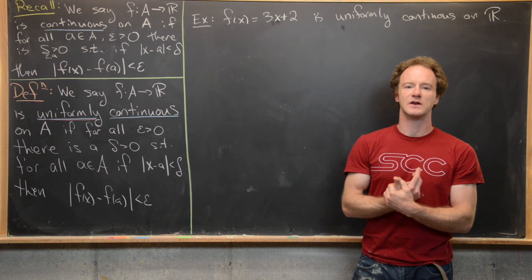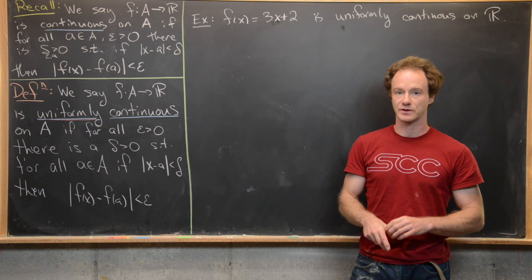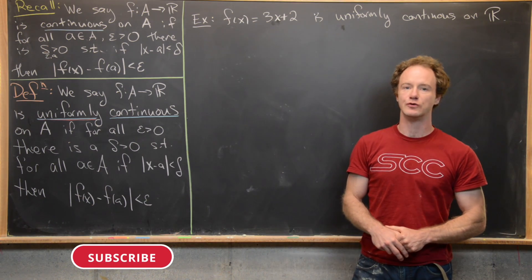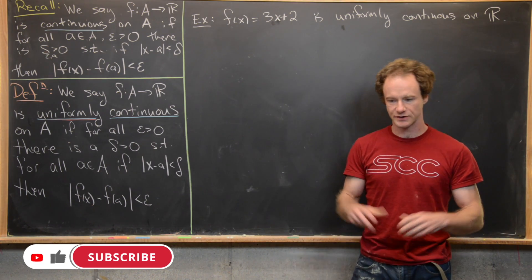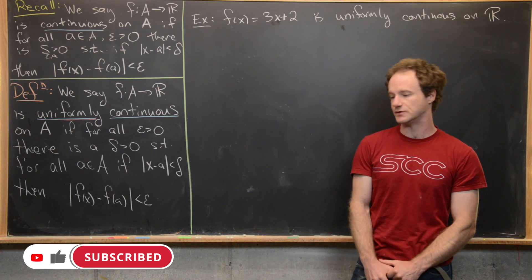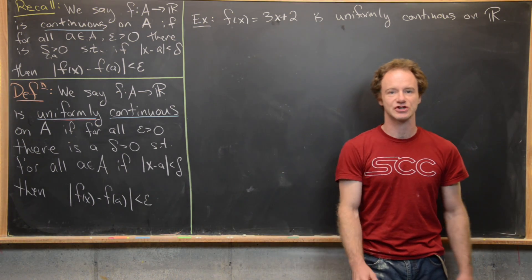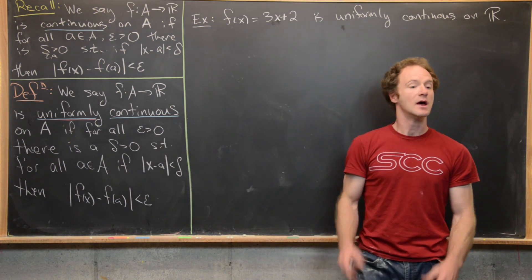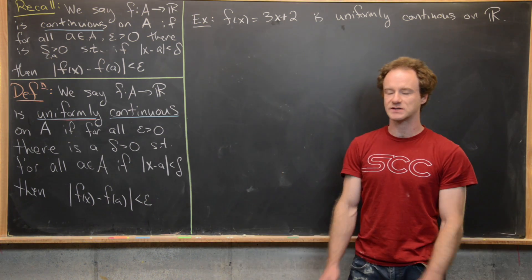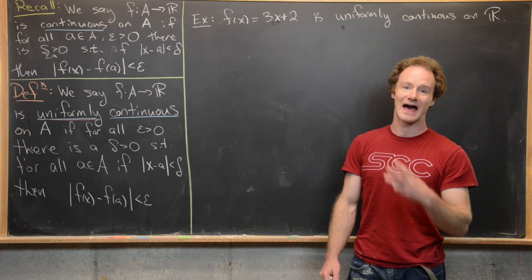We've spent a couple of videos looking at the notion of continuity of functions of real numbers. Now we're ready to look at the notion of uniform continuity, which is a strengthened version of continuity. Before we do that, let's recall the definition of continuity, extended to continuity on a set instead of at a point.